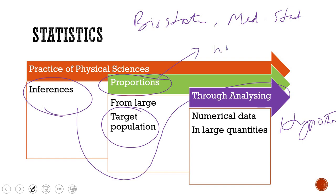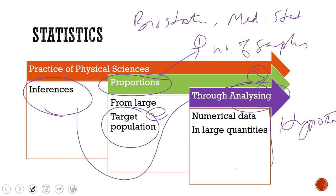The relative proportion gives you the number of samples — this is important. First is the number of samples, second is the target population, and third is the analysis. At the end of that statistical practice you draw certain differences or reach a conclusion about a particular method. Repeating: it is not necessary that all statistical methods will have a hypothesis or hypothesis testing.